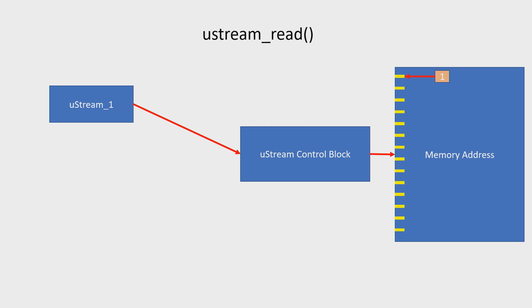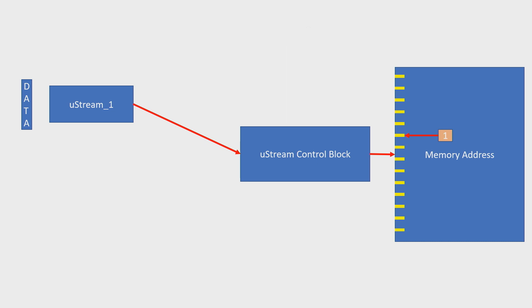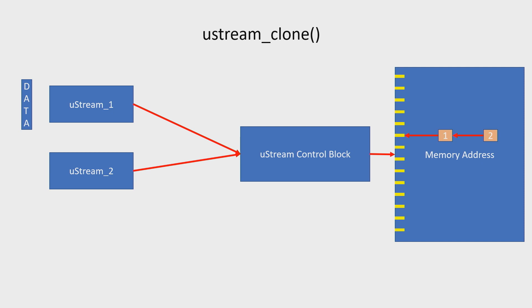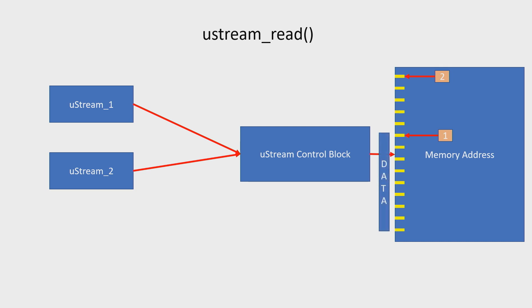If you want to read it, you pass the Ustream interface a buffer and give it a size — say, 20 bytes. The data is returned and its position is moved accordingly. If someone else wants to read the same data without copying it to save memory, you can clone the Ustream, which adds a ref count to the control block and increments it to two. The clone starts at the same position, but you can reset it to the beginning to read the whole data.